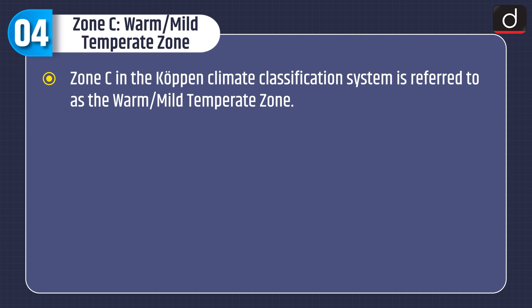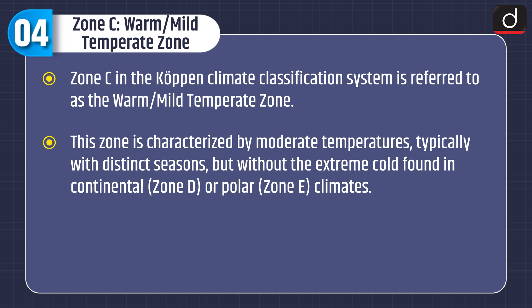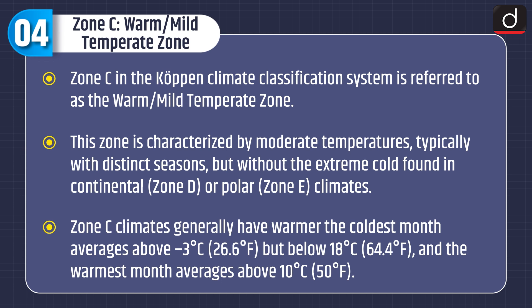Zone C in the Koppen Climate Classification System is referred to as the Warm or Mild Temperate Zone. This zone is characterized by moderate temperatures, typically with distinct seasons, but without the extreme cold found in continental Zone D or polar Zone E climates. Zone C climates generally have the coldest month averaging above minus 3 degrees Celsius but below 18 degrees Celsius, and the warmest month averaging above 10 degrees Celsius.